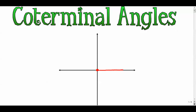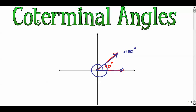If I draw 40 degrees and I wanted to draw an angle that is coterminal with that, I would start it in the same way, go around once, and then stop at 40 degrees. Those terminal sides lie on top of each other, so that one would be 400 degrees.